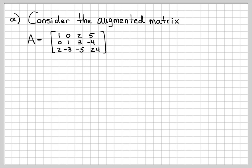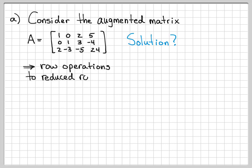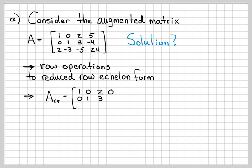When we solve an augmented matrix to find the solution to the system of linear equations, we perform row reduction — we do these row operations and get it into reduced row echelon form. We've done that in previous videos. If we do that here, we'll end up with a matrix I call A sub RR, meaning it's been row-reduced, and it looks like this. We're skipping the details and just want to interpret this row-reduced form to find the solution.